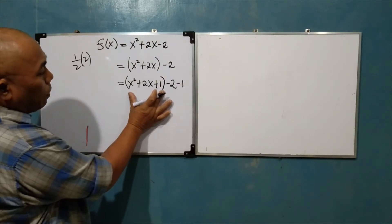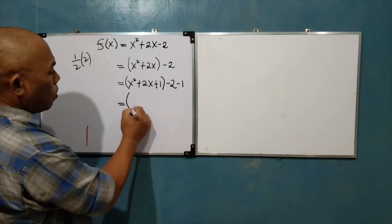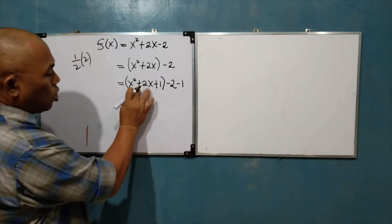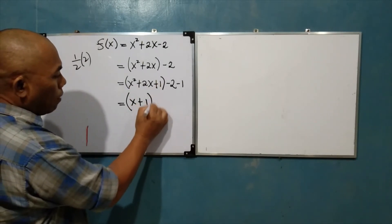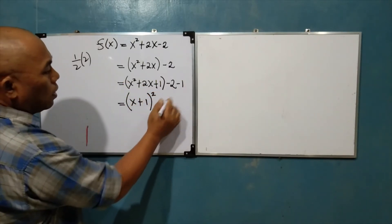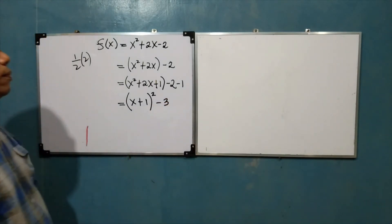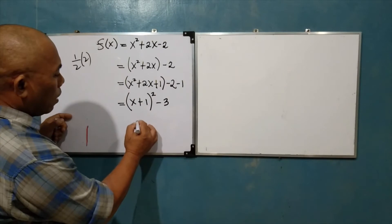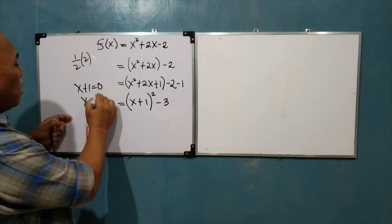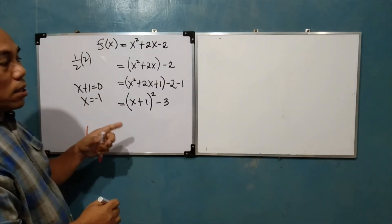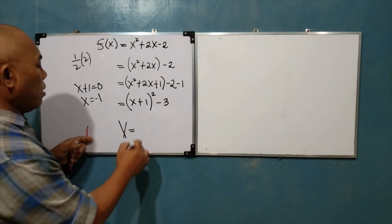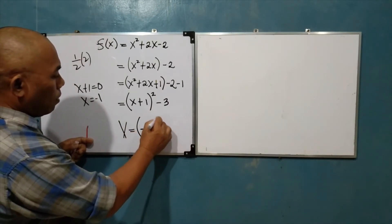These three terms now form a perfect square trinomial, so you can write it as the square of a binomial: (x + 1)² - 3. The square of x is x, and the square of 1 is 1, so this is (x + 1)². Then combining -2 and -1 gives -3. To find the x-coordinate of the vertex, set x + 1 equal to 0, so x equals -1. The coordinates of the vertex are (-1, -3).